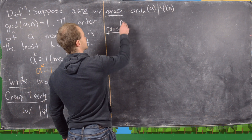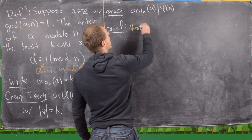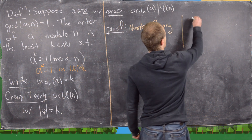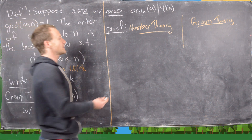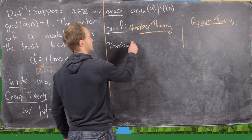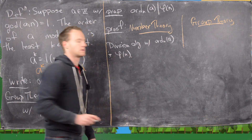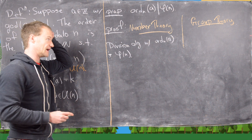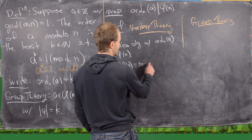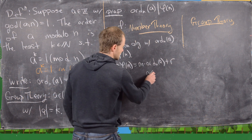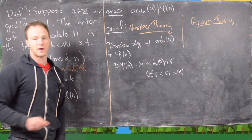For the number theory version, we use the division algorithm with the order mod n of a and phi of n. So we can write phi of n equals m times the order mod n of a plus some remainder r, where r is strictly between zero and the order mod n of a. Then we recall Euler's theorem: a to the phi of n is congruent to one mod n.